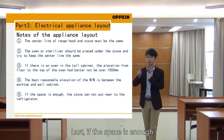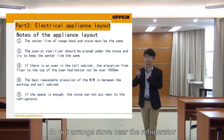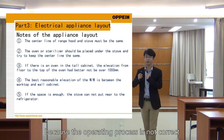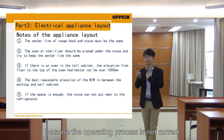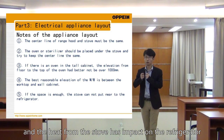Last, if the space is enough, do not arrange the stove near the refrigerator, because the workflow is not ideal and the heat from the stove has an impact on the refrigerator.